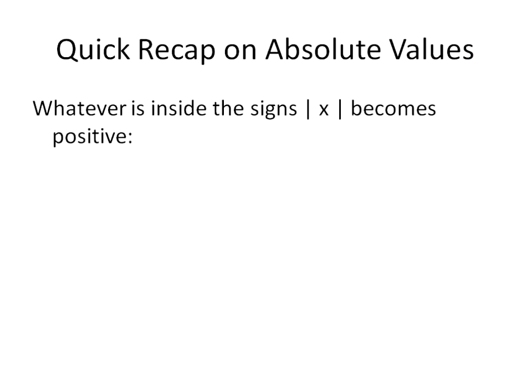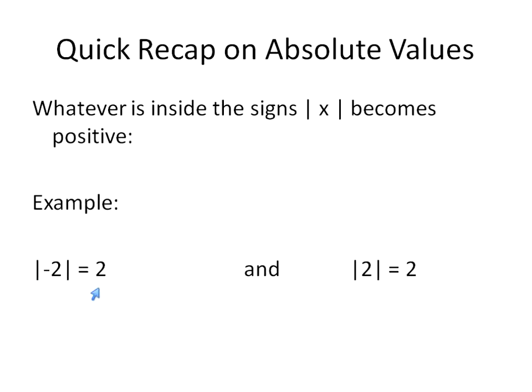So just a quick recap on what an absolute value is: whatever is inside the absolute value symbols becomes positive. For example, if you have negative 2 inside the absolute values, it becomes positive 2. If you have positive 2, it remains positive 2. If it's negative, it becomes positive; if it's positive, it stays positive. That's how absolute values work.